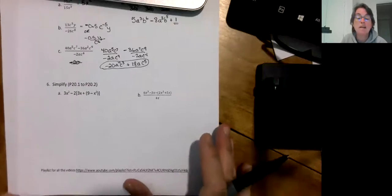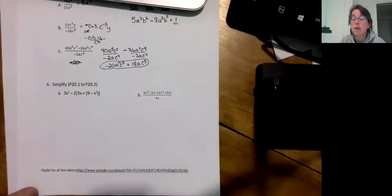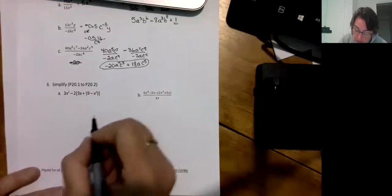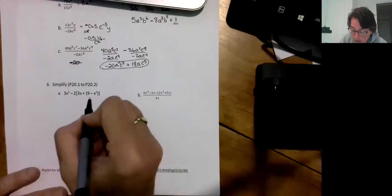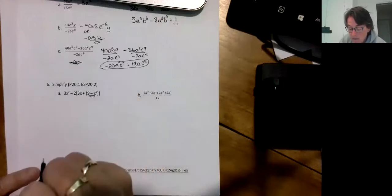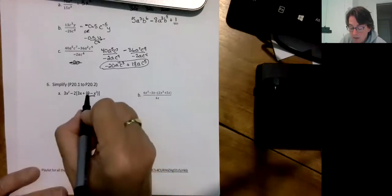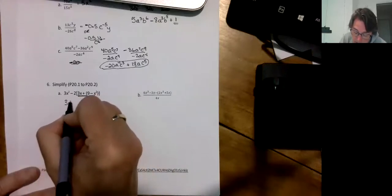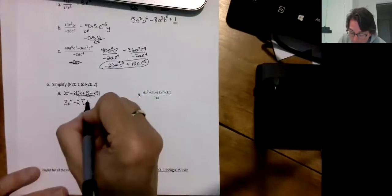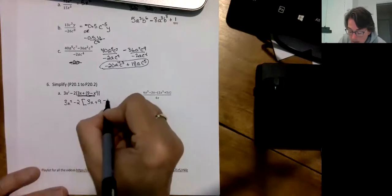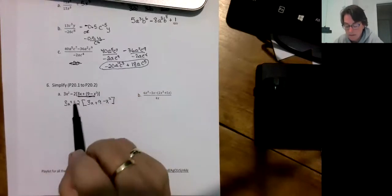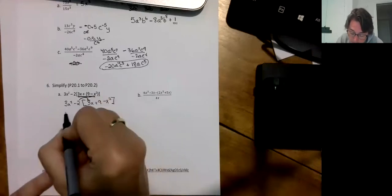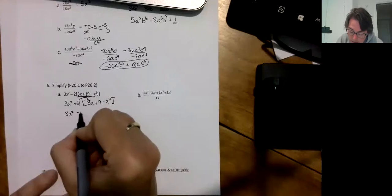This last little part is on simplifying, so this is kind of like order of operations and now you're taking that BEDMAS information and also applying it to variables, so you've thrown in some x's and y's. Order of operation says I'm going to start with my innermost set of brackets which is there, but truth be told there is nothing I can do. I can't go 9 minus x squared, so it's going to be this part that I'm going to deal with first. 3x² minus 2 times the square bracket 3x plus 9 minus x².